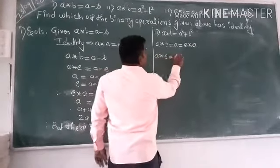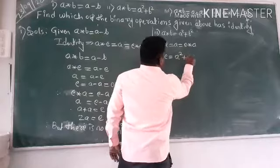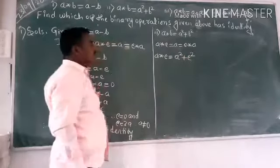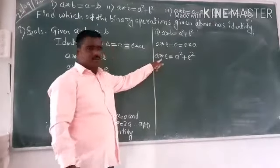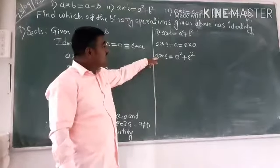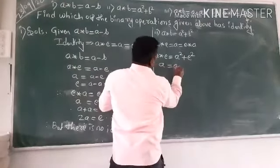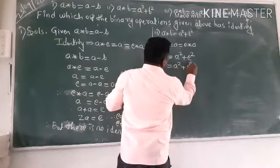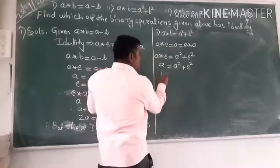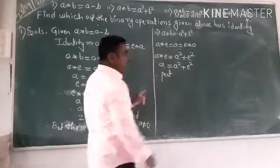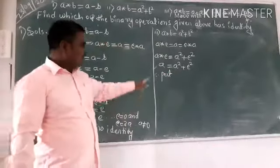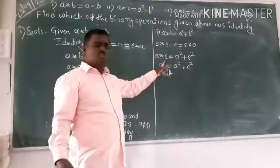I hope you know that a star e means a square plus e square. This means, it is very clear, a square plus e square. Just put, don't take a equals 1. When we can say a equals 1, it should be 0.